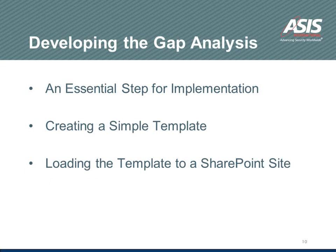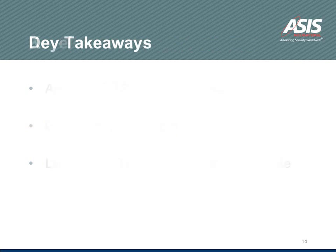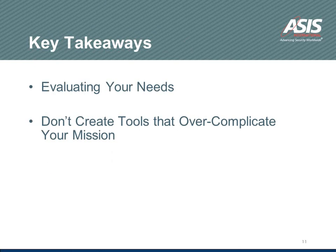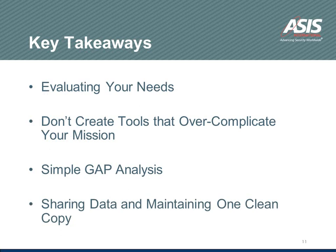Then we go into developing that gap analysis. As we mentioned, it's certainly an essential step for the implementation. Create a simple template — we made it very simple. And finally, we loaded it into a SharePoint site, which made it much easier. Each person could sign out the document, do their tasks, and put it back into the SharePoint site, so we kept track of what everyone was doing through that site. Key takeaways here: evaluate your needs, don't create tools that overcomplicate your mission — no need for Six Sigma when you can just do it as director of security. Keep it a simple gap analysis and maintain one clean copy through the SharePoint site.